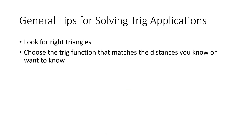Some more general tips: look for right triangles — sometimes they're obvious in the problem, sometimes you have to create them. Then choose the trig function that matches the distances you know or want to find. A common mistake is randomly picking a trig function even though it involves a side you know nothing about. Think carefully about whether you want sine, cosine, or tangent based on which sides are known.